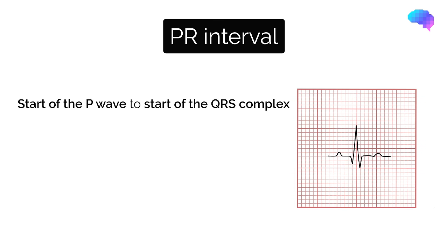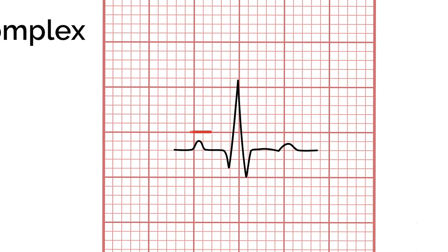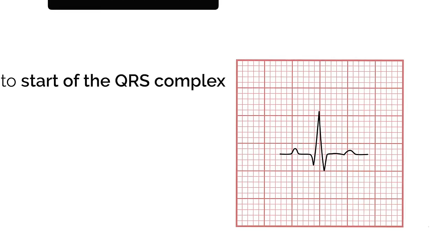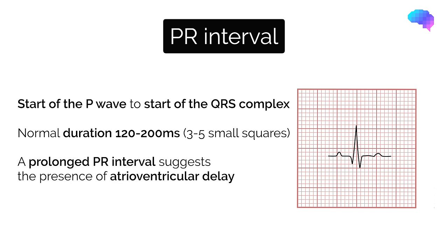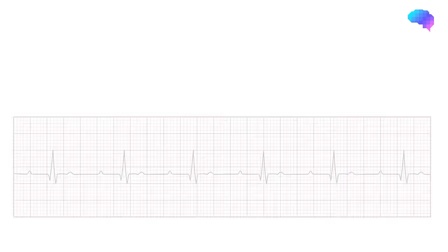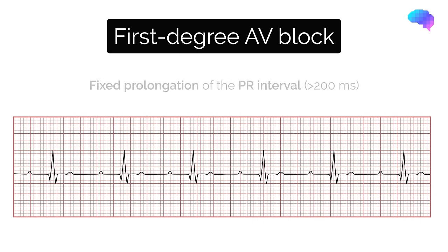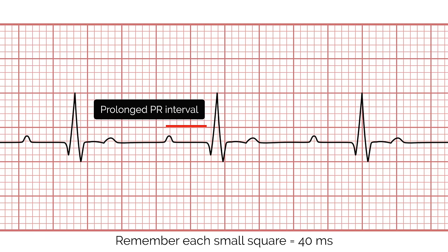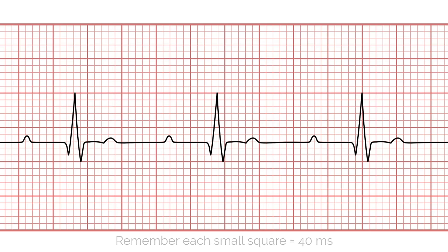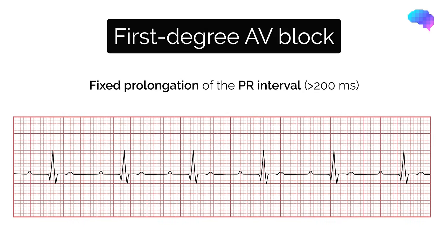The PR interval should be between 120 and 200 milliseconds, that is 3 to 5 small squares. A prolonged PR interval suggests the presence of atrioventricular delay or an AV block. First degree AV block involves the consistent prolongation of the PR interval, defined as greater than 200 milliseconds, due to delayed conduction via the atrioventricular node. Every P wave is followed by a QRS complex and there are no dropped complexes. First degree AV block is common and can often be an incidental finding, with patients usually being asymptomatic.